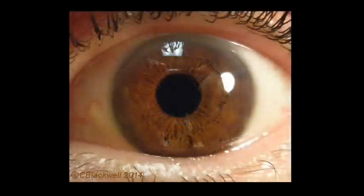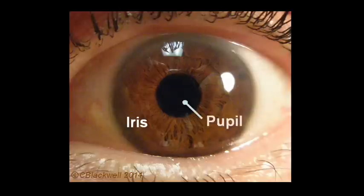Looking at the front of the eye, some parts are easy to identify. You can see the iris, the colored part, and the pupil, the round hole in the middle of the iris. The cornea, however, is so clear it can only be seen by the light reflecting off its surface.